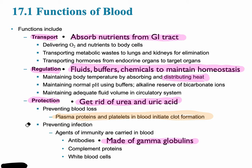The last function is protection. The first thing we think of for protection is blood loss. Whenever there is a hole or damage to the blood vessel wall, there are small cell fragments called platelets that basically plug that hole in the blood vessel wall. This leads to clot formation, and that hole is eventually replaced by a fibrin network.